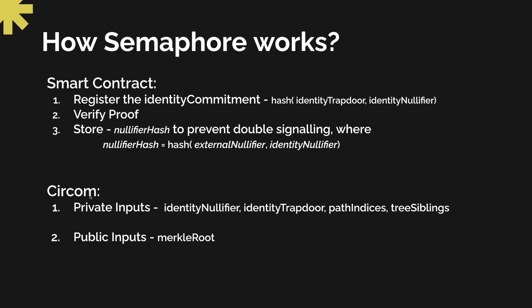On the circuit side, we will have to prove that the user is part of a certain identity set without revealing the actual identity of the user. We will have certain private inputs and public inputs. The private inputs consist of identity nullifier, identity trapdoor, path indices, and traceable links.